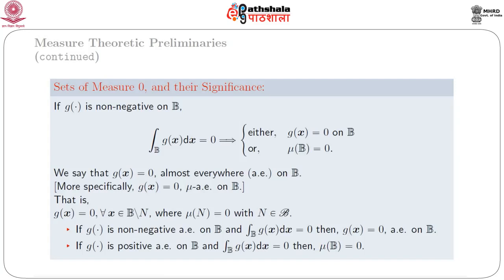If the function g is nonnegative almost everywhere mu on B and the integral of g(x) over B is equal to 0, then g(x) is equal to 0 almost everywhere on B. If g(x) is positive almost everywhere mu on B and the integral of g(x) over B is equal to 0, then mu(B) is equal to 0.